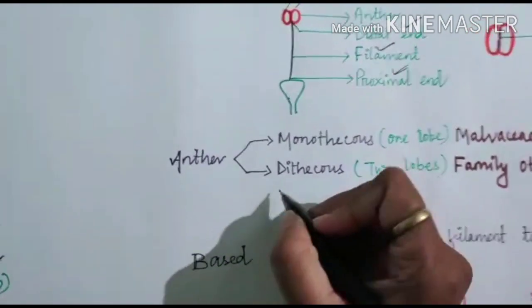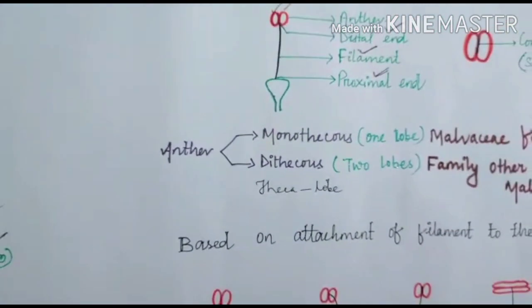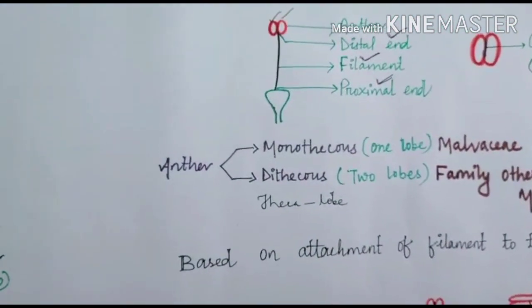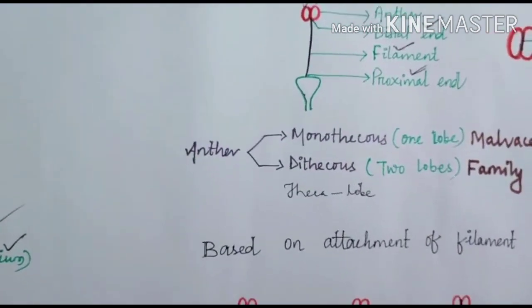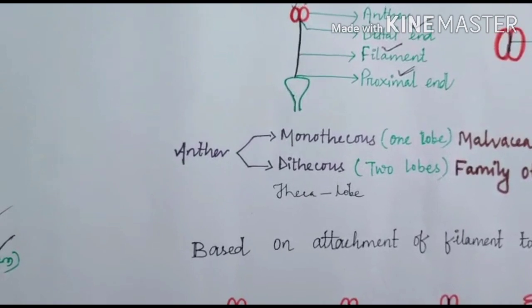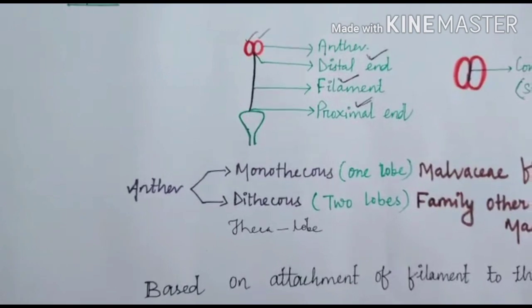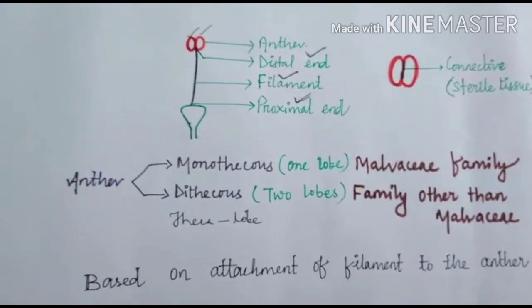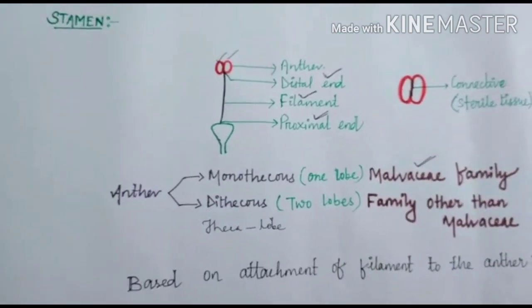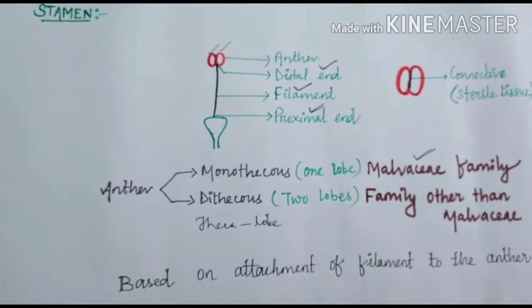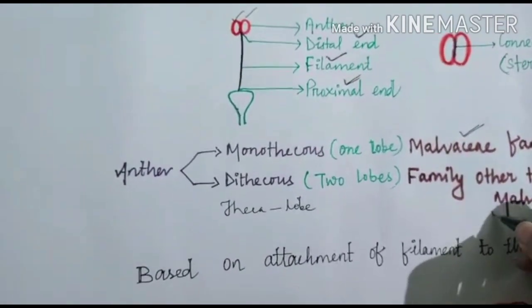The anther may be monothecous or dithecous. Theca means lobe. So if the anther contains one lobe, it is called a monothecous anther. If the anther contains two lobes, it is called a dithecous anther.